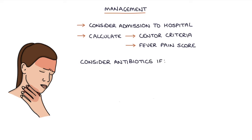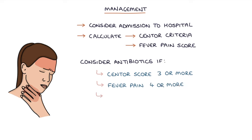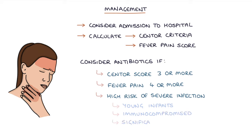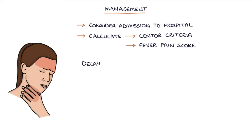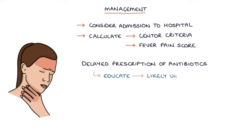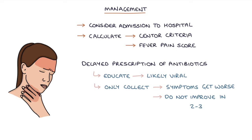Consider prescribing antibiotics if the Centor score is 3 or more, or if the FeverPAIN score is 4 or more. Also consider antibiotics if the patient is at high risk of more severe infections, such as young infants, immunocompromised patients, or those with significant comorbidities or a history of rheumatic fever. Delayed prescriptions of antibiotics can also be considered — this involves educating patients or parents about the likely viral nature of the sore throat and prescribing a prescription to be collected only if the symptoms get worse or do not improve in the next 2–3 days.